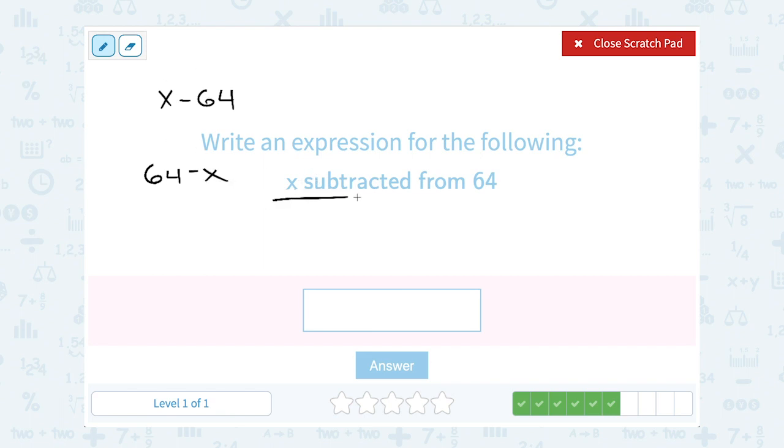Well, x is being subtracted from 64. So that would be this one, right? 64 minus x. x is the number being subtracted. This would be 64 subtracted from x. So again, being really, really careful with the order when you have those subtraction keywords.